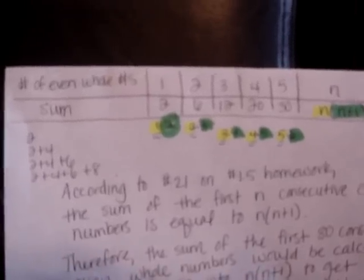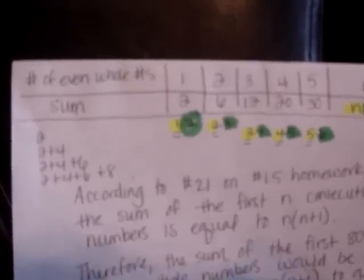Okay guys, so what you have before you is the sum of the first n even whole numbers. You remember this from 1.5 number 21.